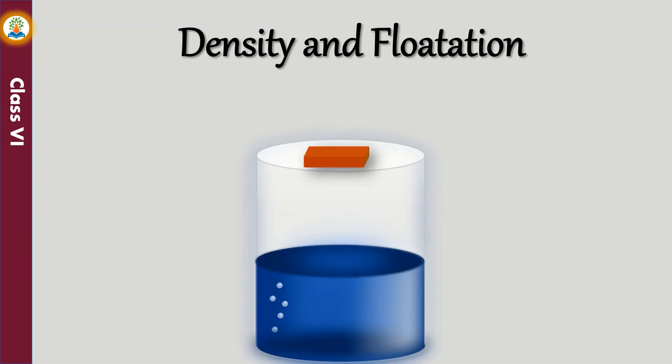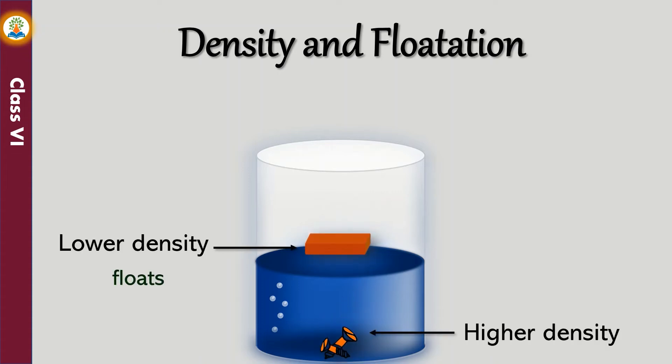A substance with a density lower than that of water floats on it, whereas the substance with a density higher than water sinks to the bottom. Density of a substance is defined as mass per unit volume.